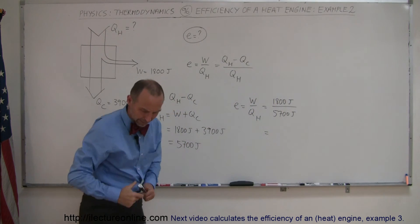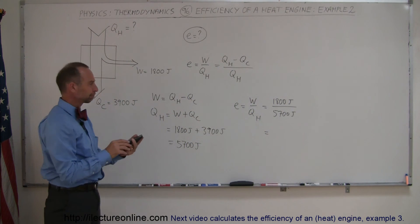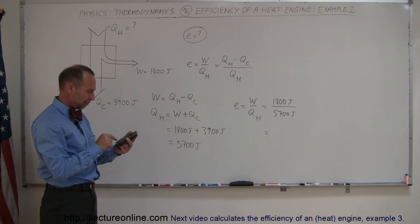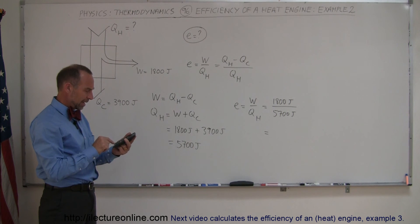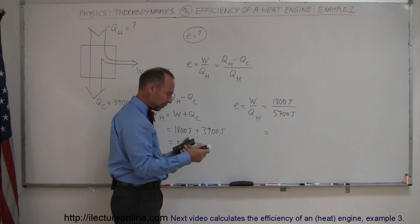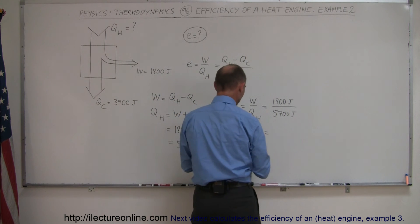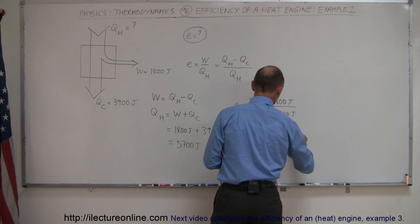And that ratio, I'll need a calculator for that. So I have 1,800 divided by 5,700, and that would be 0.316. Rounding it off to three significant figures gives 31.6%.